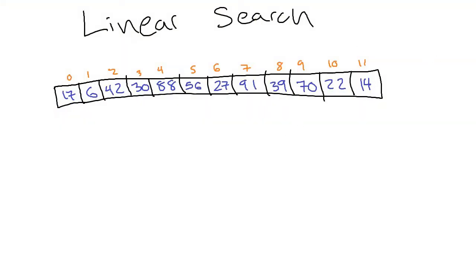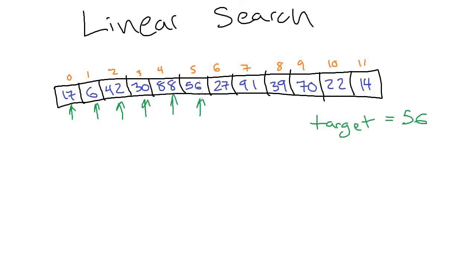Linear search is quite a simple algorithm. In linear search you want to search through some sequential data structure — it could be an array, array list, linked list, or whatever — and you're looking for a target item. Let's say our target item is 56. We start at index zero, check if it's the item we're looking for, and if not, carry on linearly through the structure until we find what we're looking for.